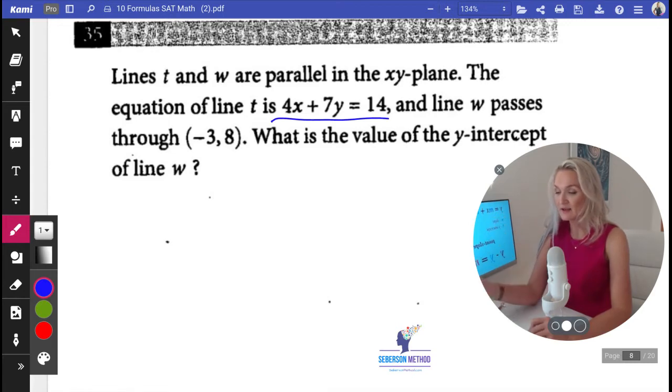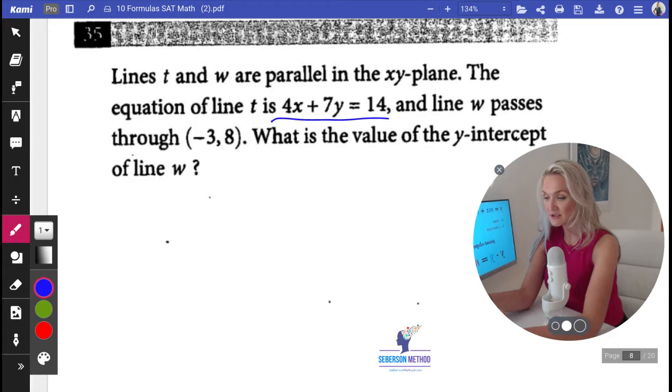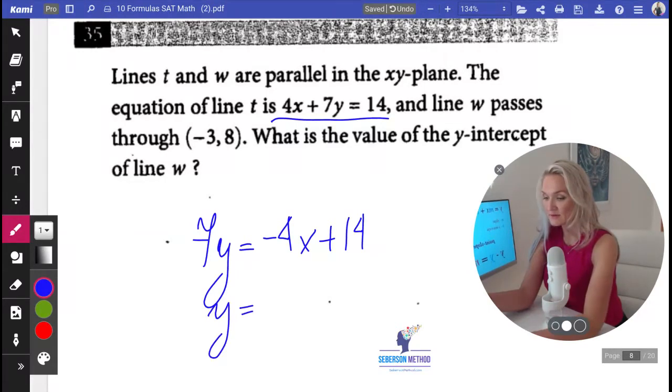Easy breezy. Here's what we're going to do. We're going to rearrange line T to find its slope. 7Y is equal to negative 4X plus 14. Next step, we're going to divide everything by 7. Y is equal to negative 4 over 7 X. I really don't care about the Y intercept, but you know, it's 2.